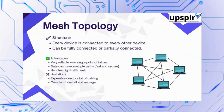Then we have mesh topology, which is very reliable. Here devices are connected to each other with multiple paths, so even if one connection fails, others can still continue. The only problems are that it is expensive due to a lot of cabling and complex to install and manage. A very common example of mesh topology today is the internet, where devices have multiple paths among them providing the resilience required.